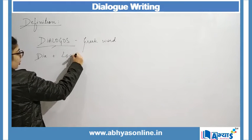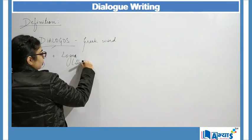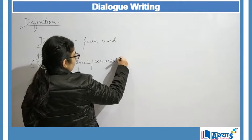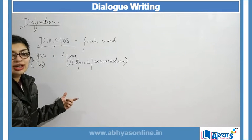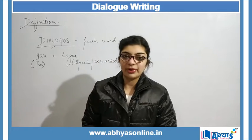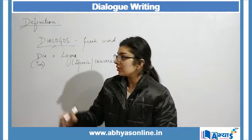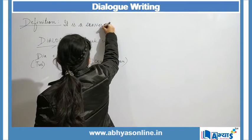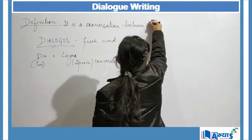Dia means 'two' and logos means 'speech or conversation.' From these two meanings we are clear that dialogue is basically a conversation or speech between two people, or it can be among more than two persons.